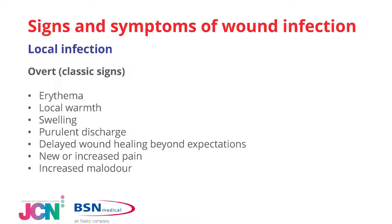Of course, those classic overt signs are erythema — that redness — local warmth, swelling, and purulent discharge. Let's not forget that exudate may not change in volume but may change in viscosity, going to a thicker consistency, which is a really classic indicator that the amount of microorganisms in the exudate is increasing — meaning it's increasing in the wound bed. Be aware of just the viscosity as well.